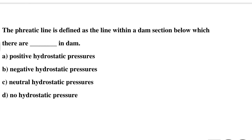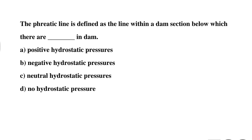Question 19: The phreatic line is defined as the line within the dam section below which there are — in a dam — Option A: positive hydrostatic pressure, Option B: negative hydrostatic pressure, Option C: neutral hydrostatic pressure, Option D: no hydrostatic pressure. The correct answer is Option A: positive hydrostatic pressure.